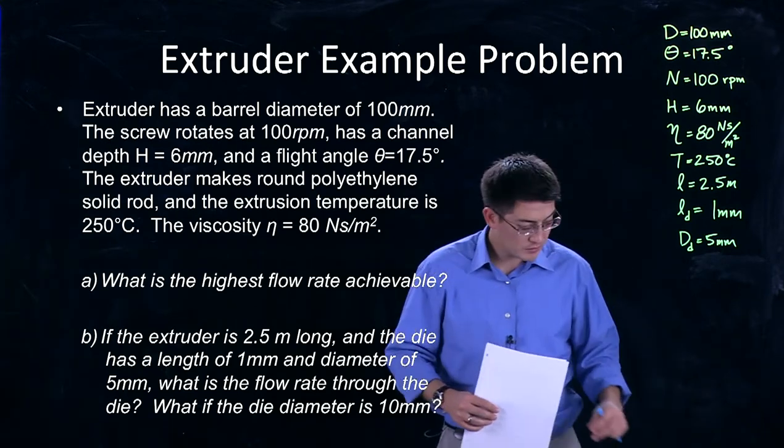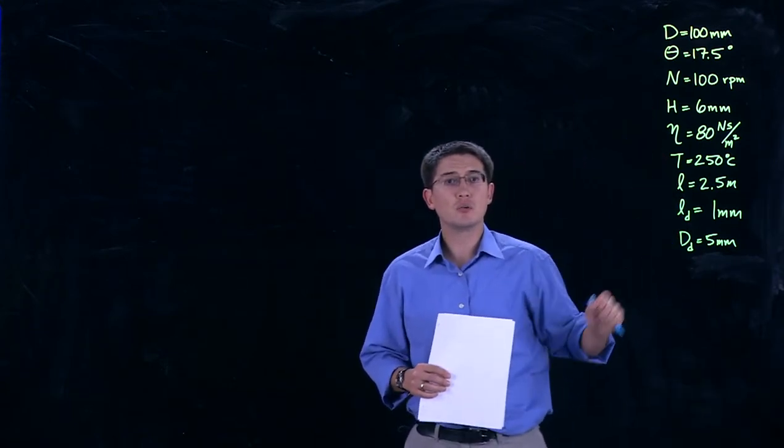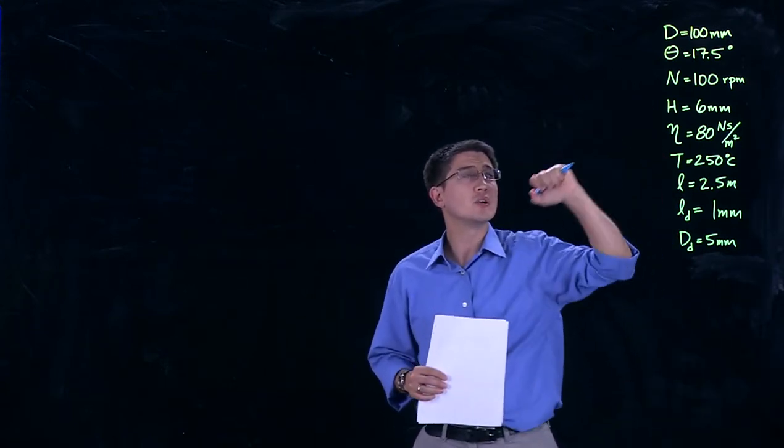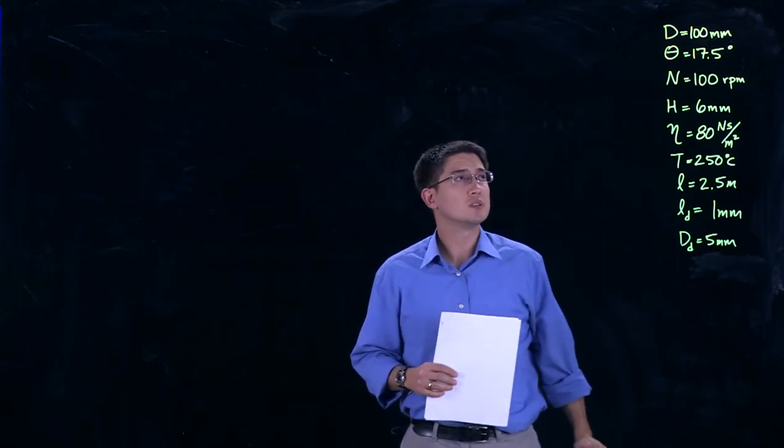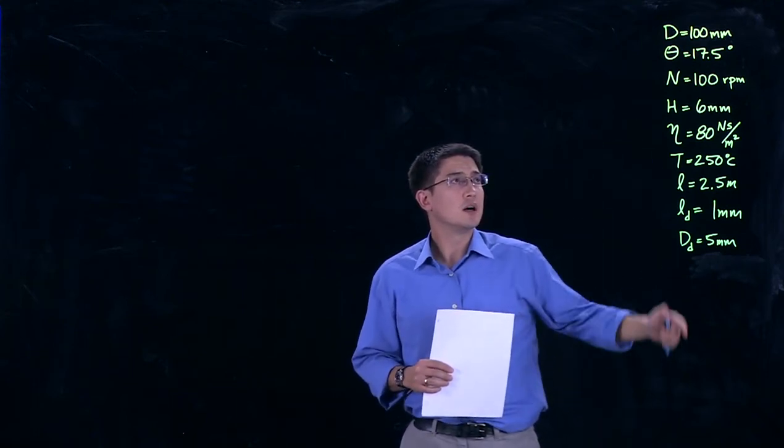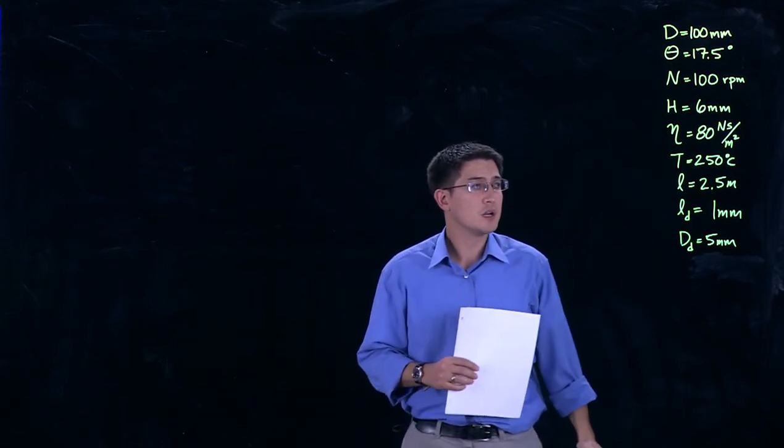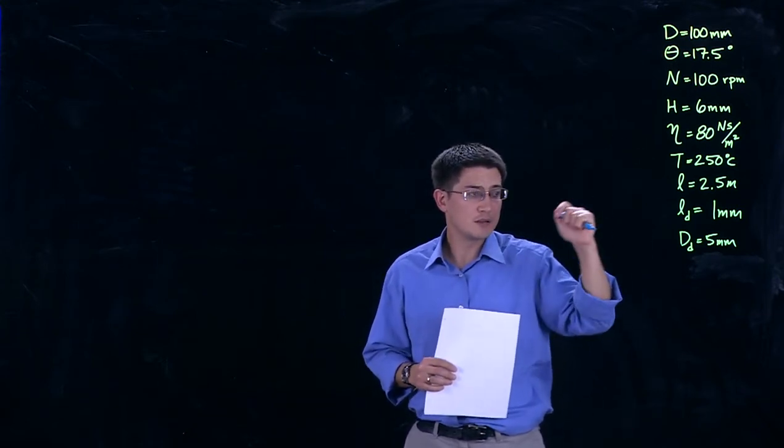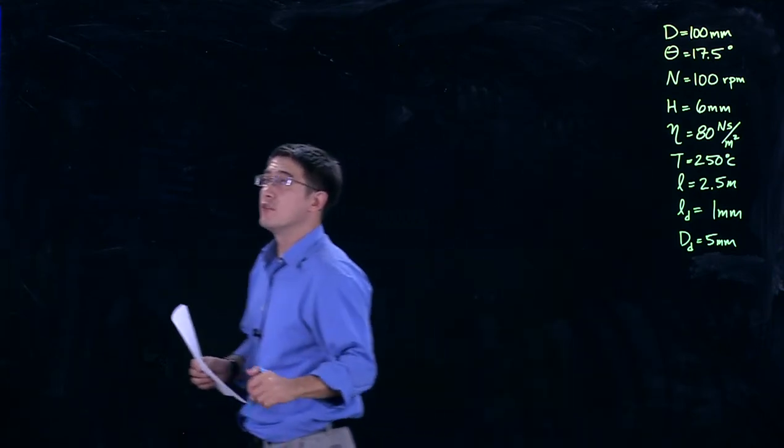So let's go ahead and take a look at this. I've written down the values that we'll need to know over here. So we have the diameter of the extruder, the flight angle, the revolutions per minute, the height, the viscosity, the temperature, the length of the barrel, the die land, as well as the diameter of the die exit.